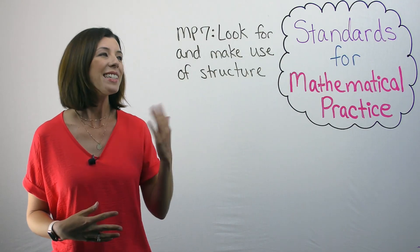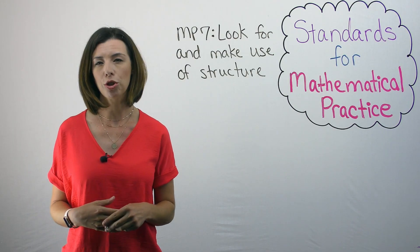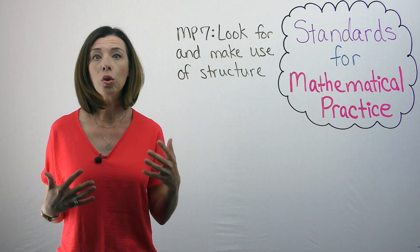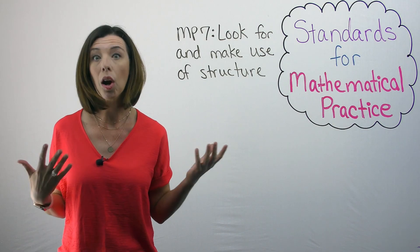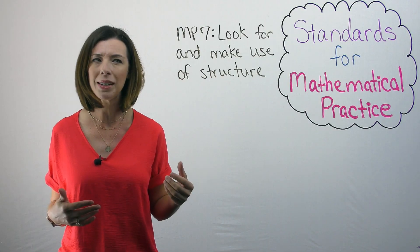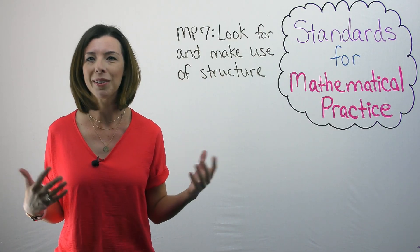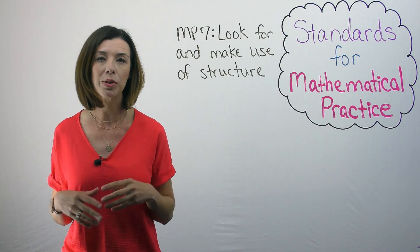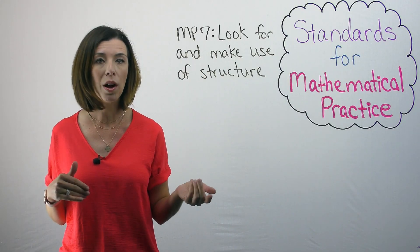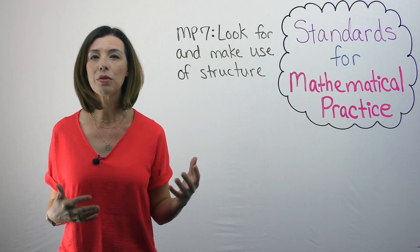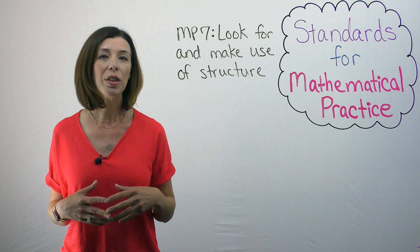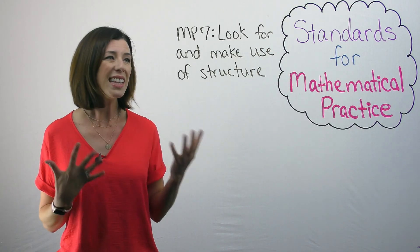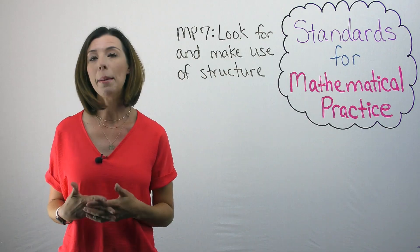Mathematical practice number seven says we need to look for and make use of structure. We want students to make connections — for instance, all closed figures with straight sides are polygons, so a square is a polygon, a rectangle is a polygon, a hexagon is a polygon. This could also mean composing and decomposing numbers: 11 is made up of 10 plus 1. It could even be making use of structure in number properties — the commutative property says that 1 plus 3 is the same as 3 plus 1.